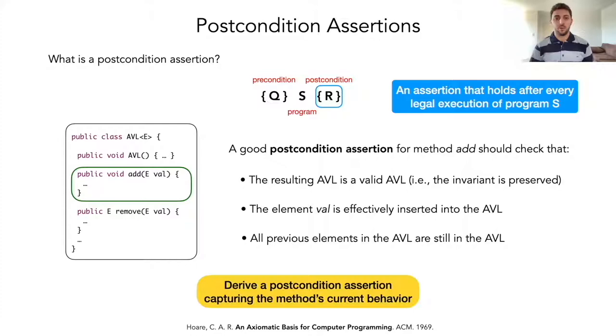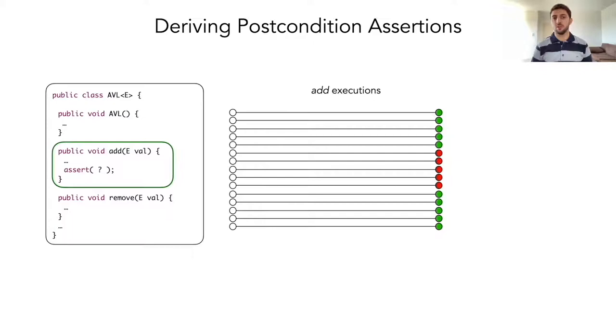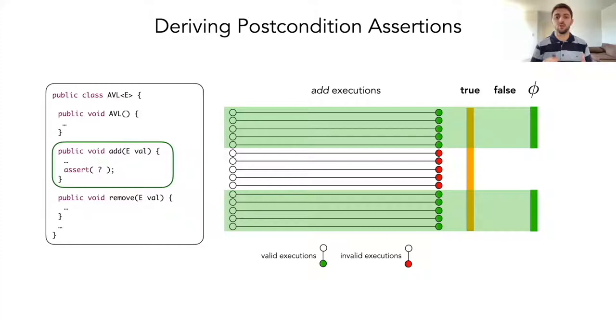Our idea is to derive a post-condition assertion capturing the method's current behavior. The current behavior is considered valid, and any other behavior is considered invalid. In order to derive a post-condition assertion, we should consider all possible executions of the method, the valid ones and the invalid ones. Among the post-conditions one may consider, we have many: one may be true that captures all executions, false that captures no execution at all, and the one we expect to have is the one that captures the valid executions while rejecting the invalid executions.